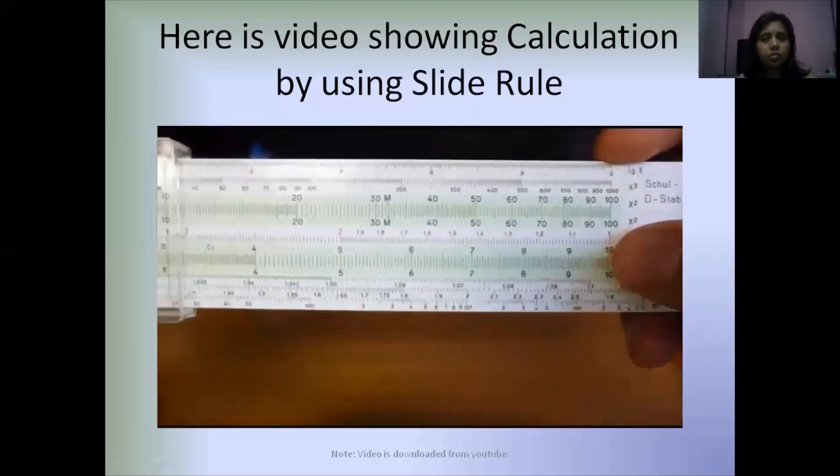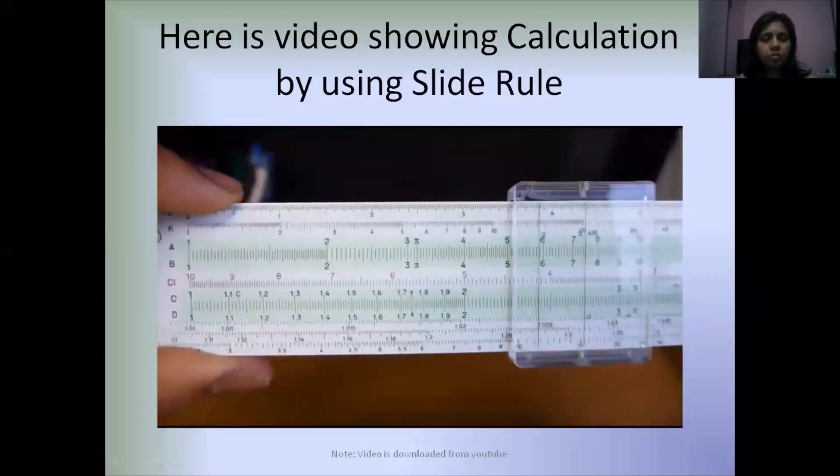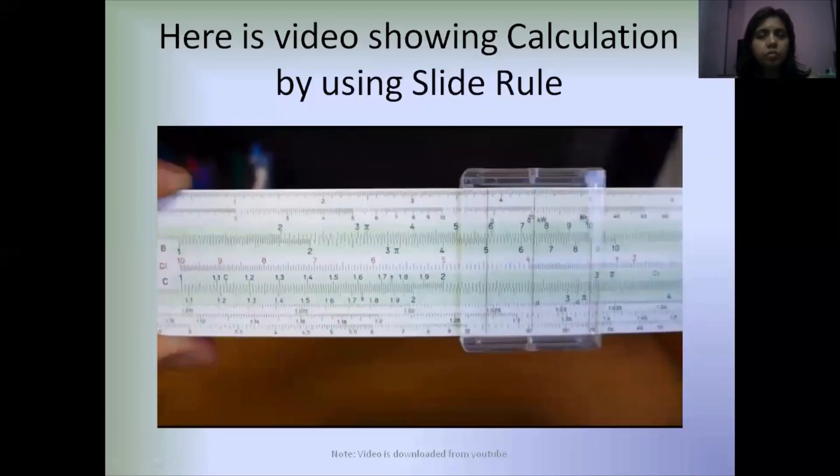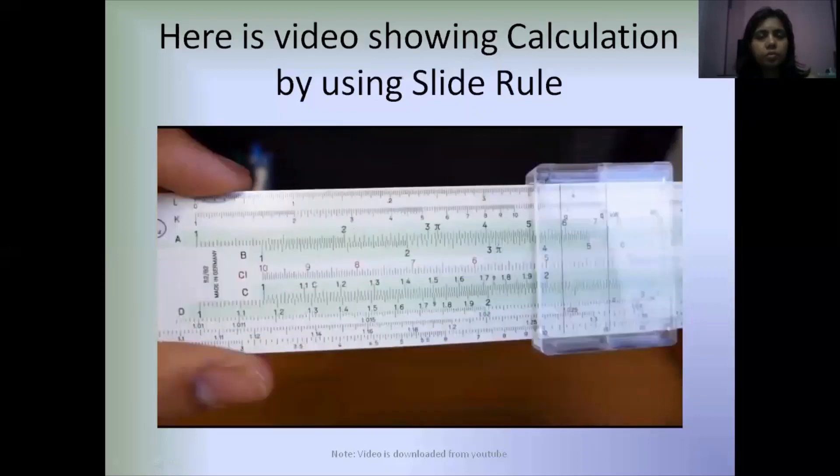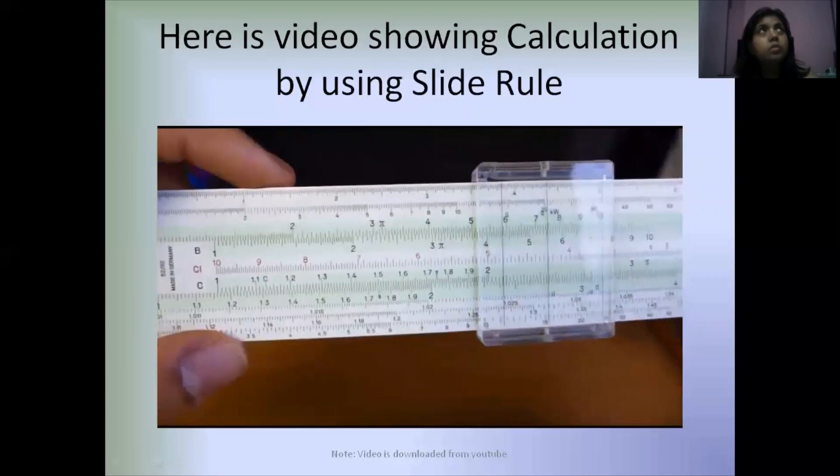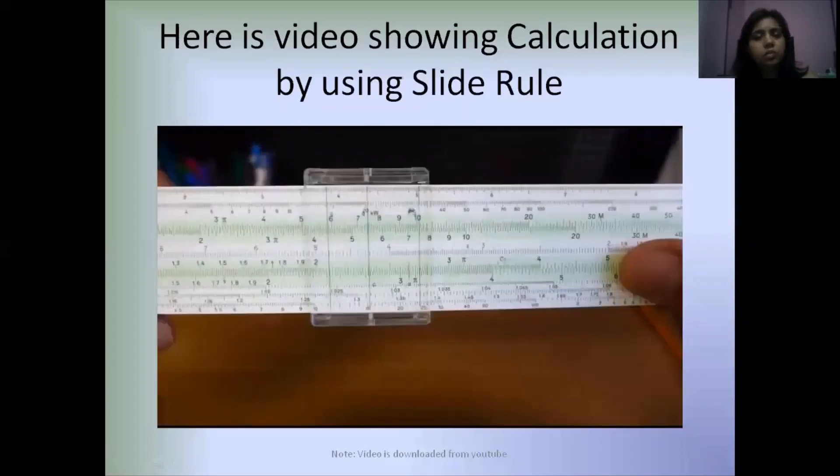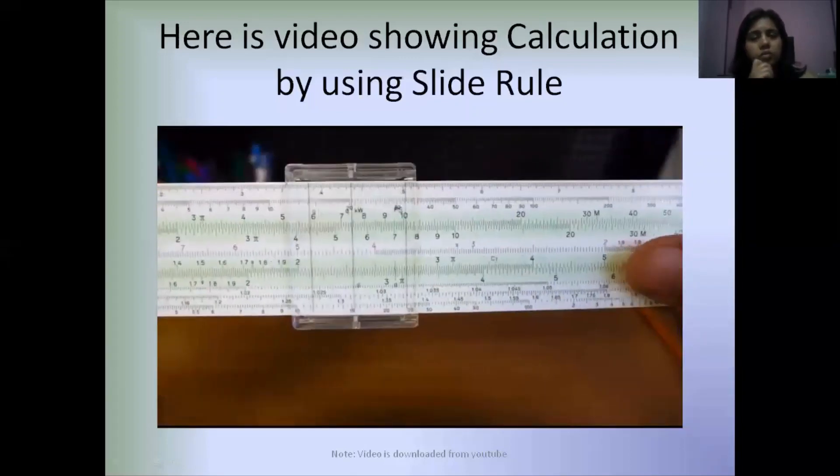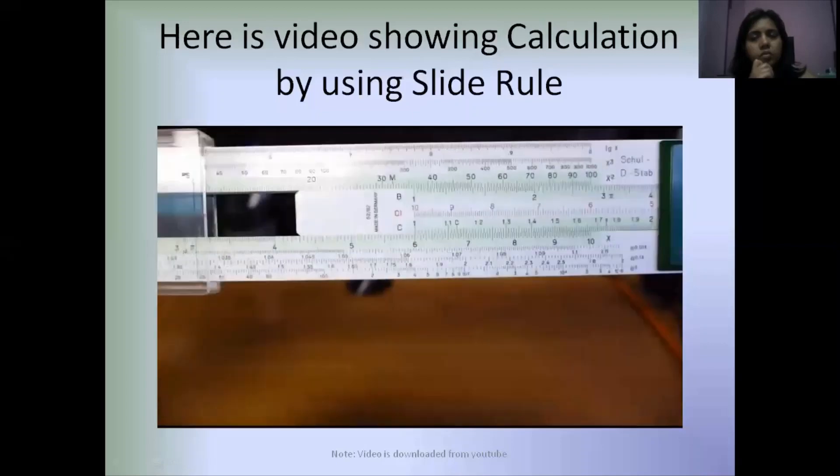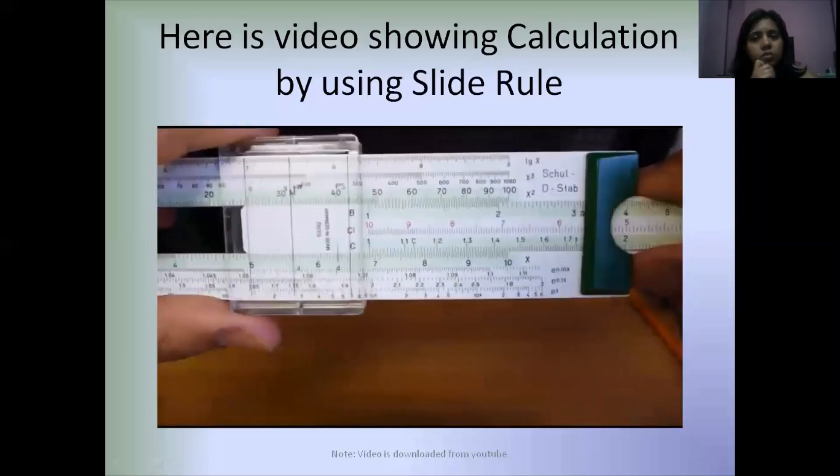When multiplying, you take one of the indices of the C scale and set it to the first number you want to multiply on the D scale. For example, if we want to multiply seven by six, we take one of the indices on the top and move it to the number you want on the bottom. Let's move it to the seven.